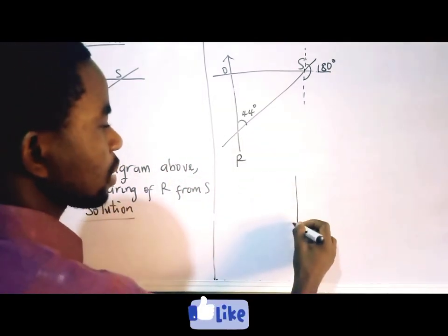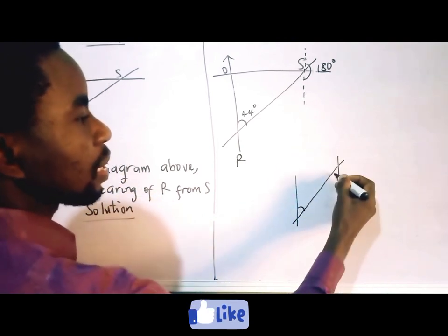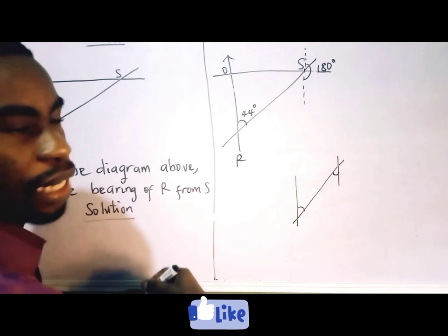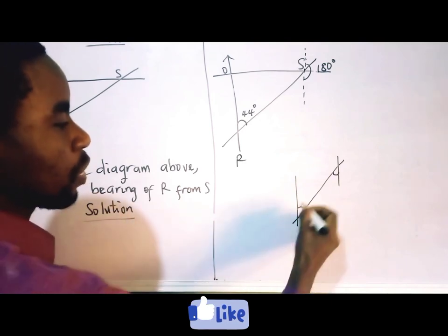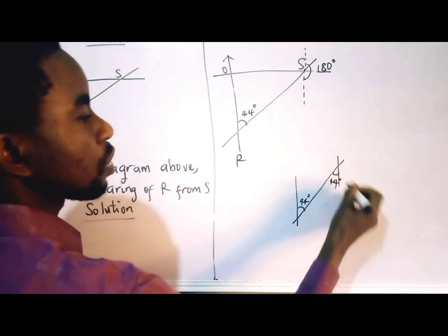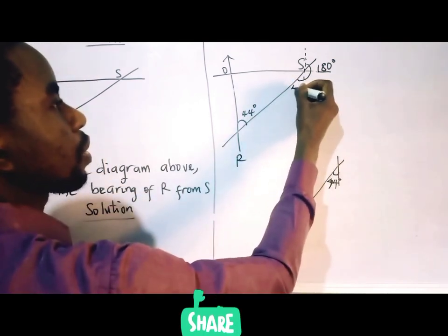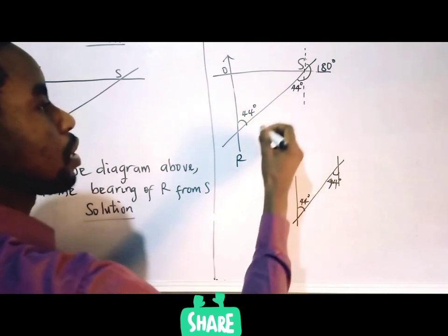We have something like this. These are alternate angles, okay? So if this is 44 degrees, this is also 44 degrees. So this angle here is 44 degrees. So the bearing of R from S is...